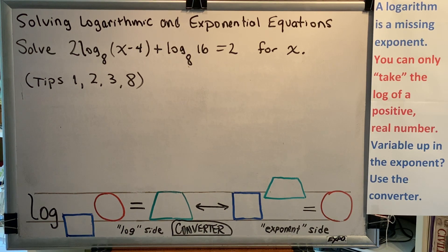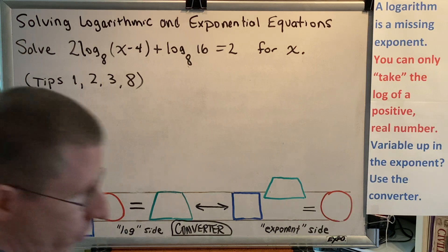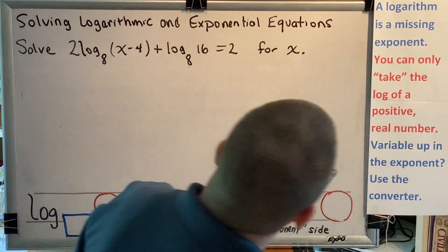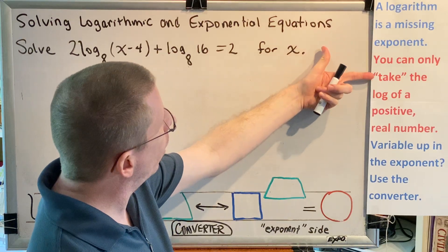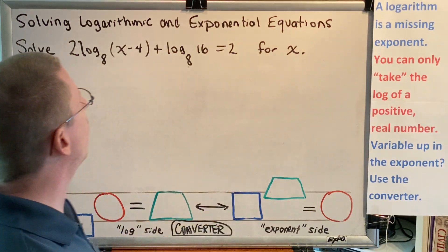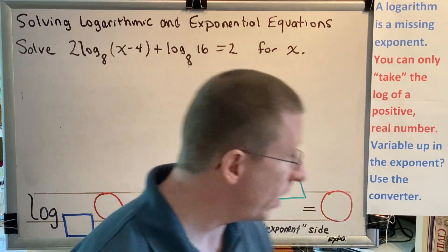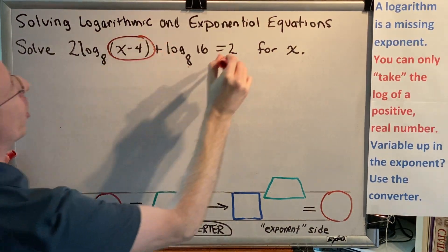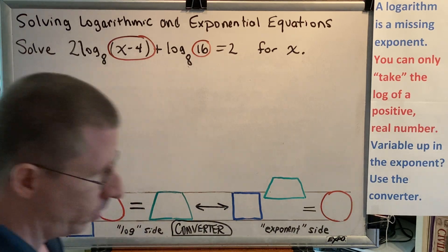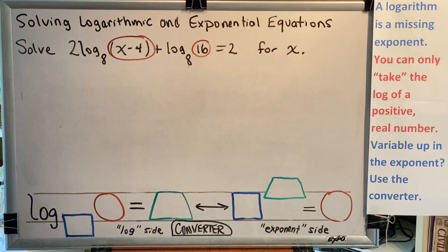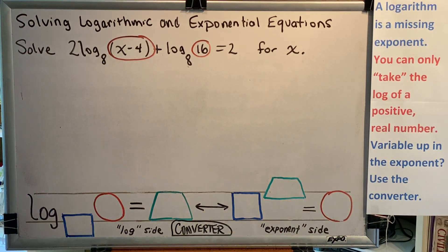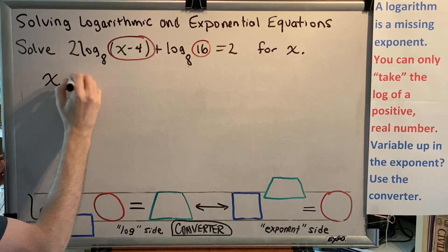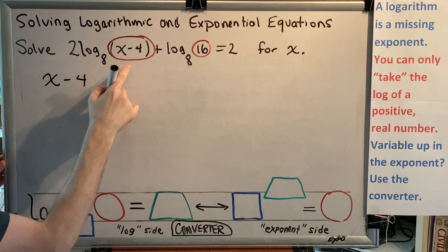Let's begin. So the first thing we need to do here is domain. One of the things that we learned in a previous video is you can only take the log of a positive real number. So what that means is for each log, you should identify the argument and make sure that that argument is a positive real number. 16 is a positive real number, so we're fine. But we don't know the value of x, so what we'll do is write an algebraic statement instead. x minus 4, which is the argument,